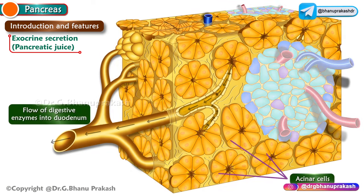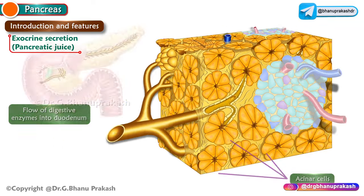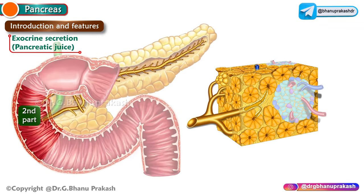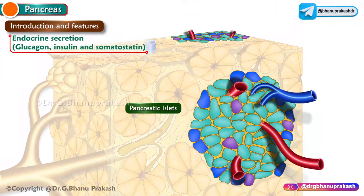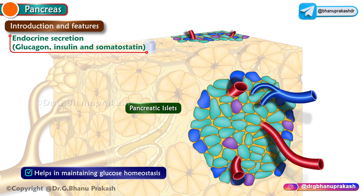It produces exocrine secretions — that is, the pancreatic juice — from the acinar cells. These secretions enter into the second part of the duodenum, where the main pancreatic duct along with its accessory pancreatic duct secretes these secretions, which help in the digestion of macromolecules such as lipids, carbohydrates, and proteins.